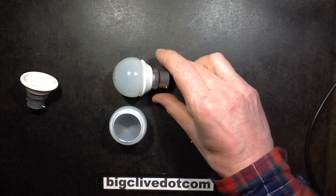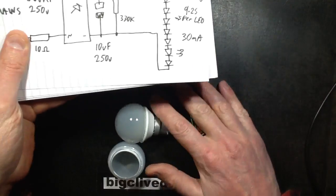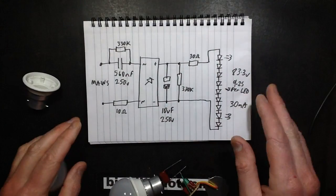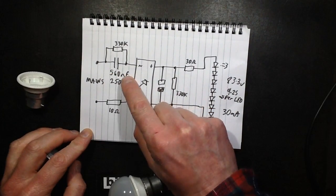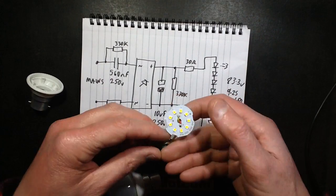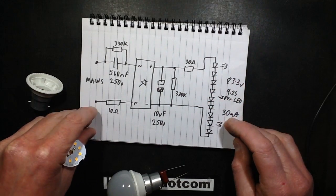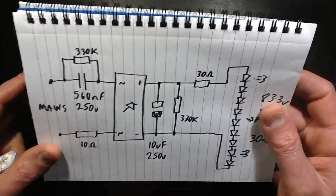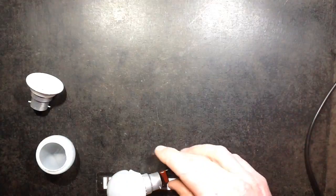You may recall from a previous video I did on it, this is the circuitry and it's got this generous 560 nanofarad capacitor and each of these LEDs contains three chips and it runs them quite hard to the point they get very very hot. So I'm going to downgrade it.